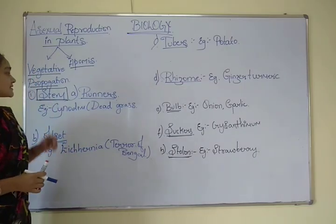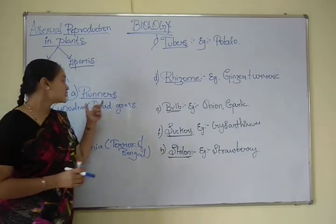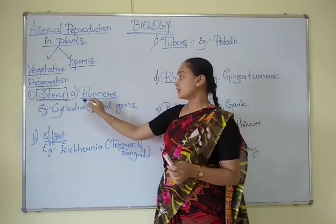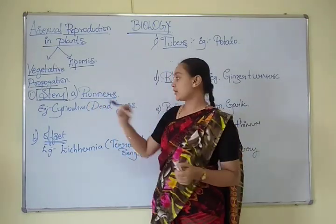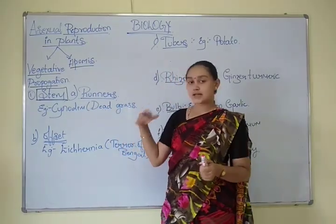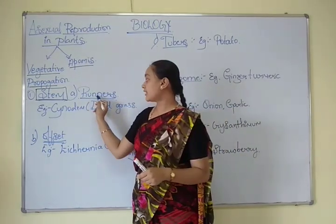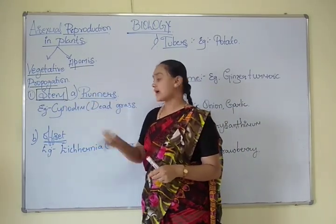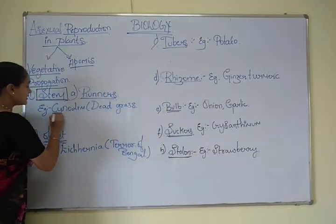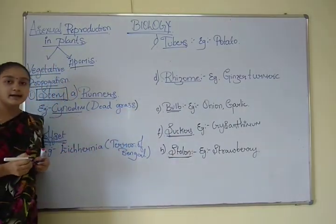In this class, let's study about the stem. The first type is runners. Runners have green or soft stems where the stem creeps on the ground. The example for runners is Cynodon, which is commonly called as dead grass.